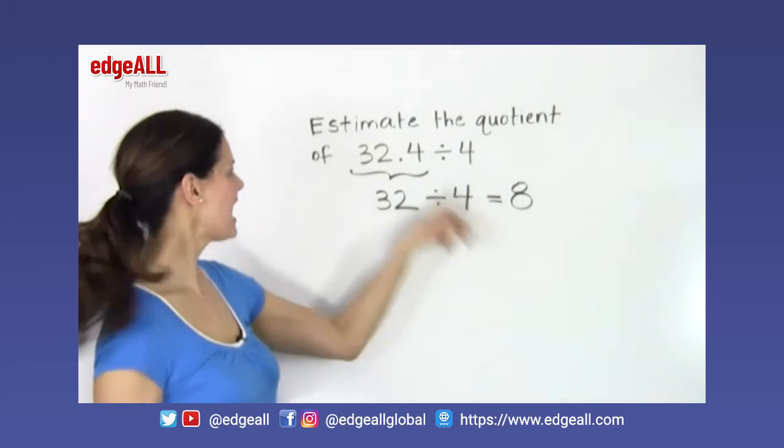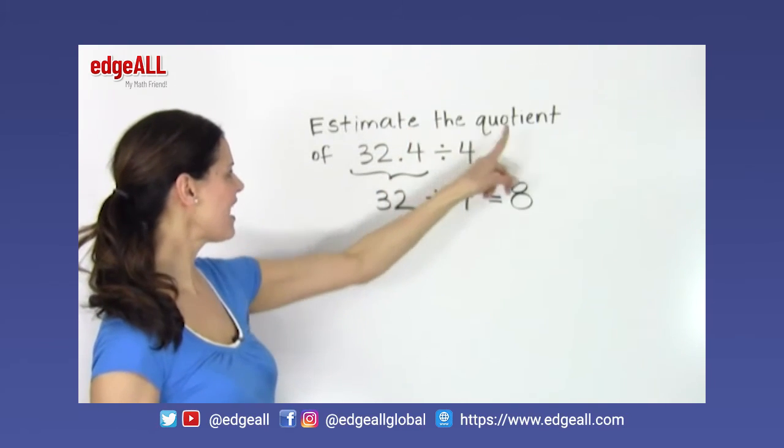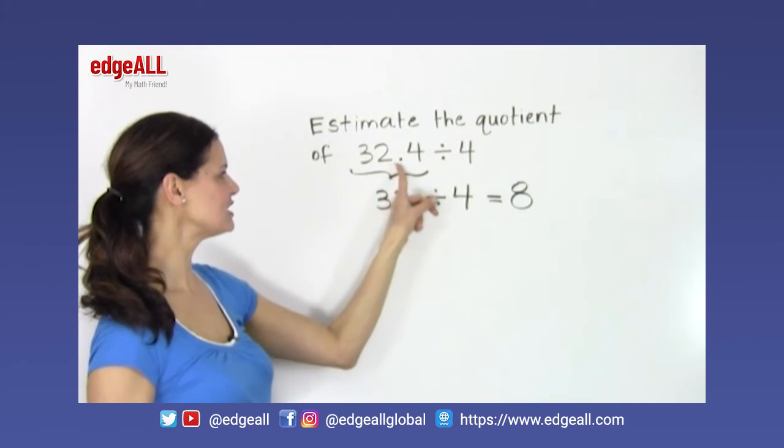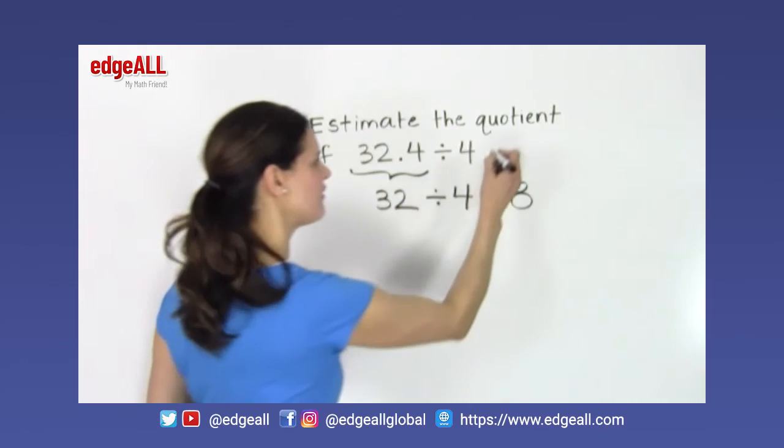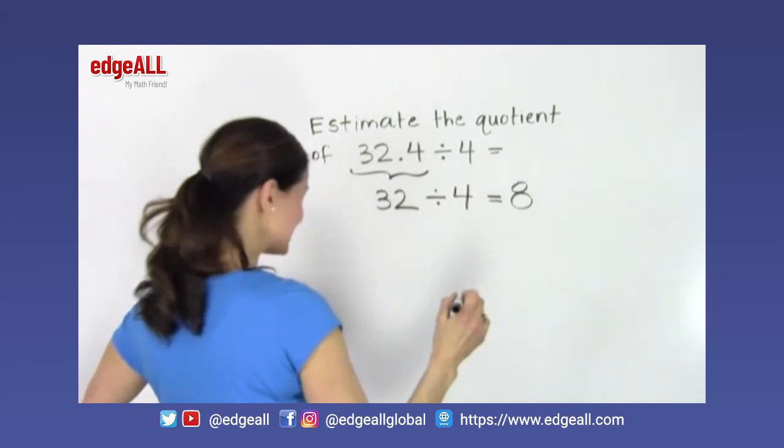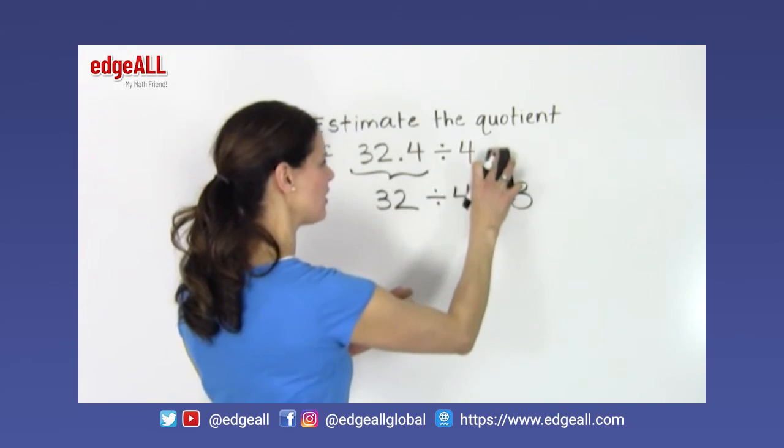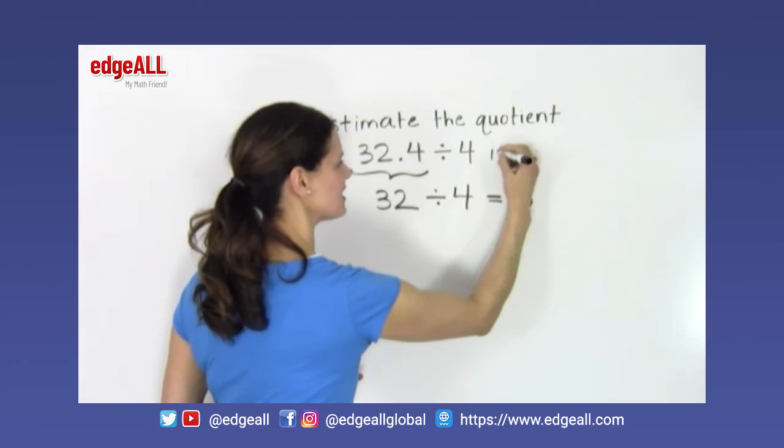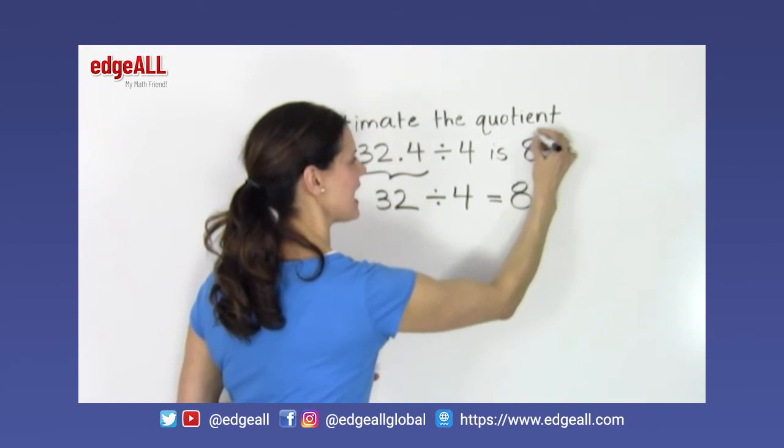Then I can stop here and say that the estimation of the quotient of 32.4 divided by 4 equals, or is, I should say, since it's not exactly equal, I can say that the estimation is 8.